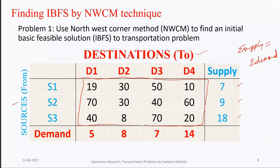The total summation of supply is 7 + 9 + 18 = 34. The total demand is also 34. Since both are equal, the given problem is balanced and we can proceed with NWCM.